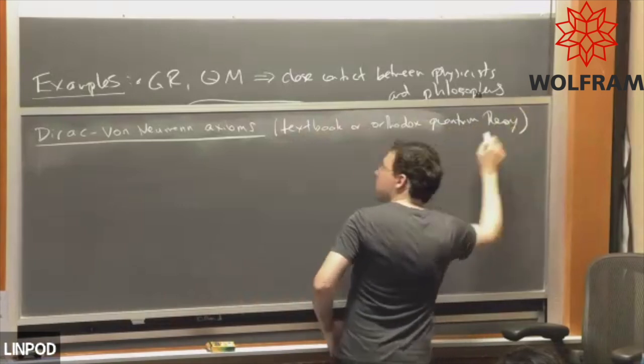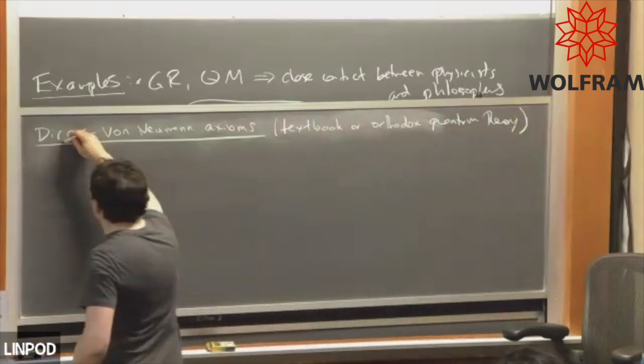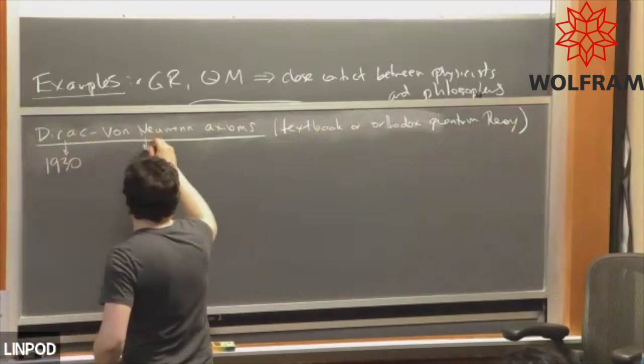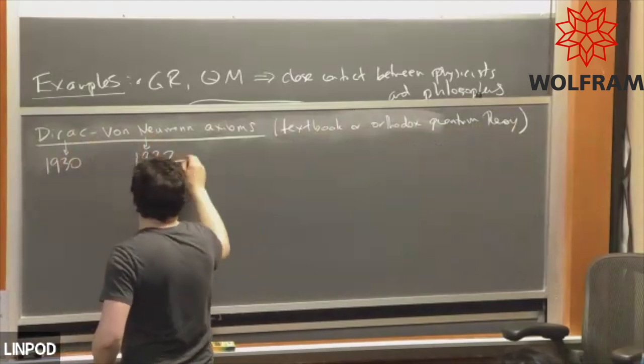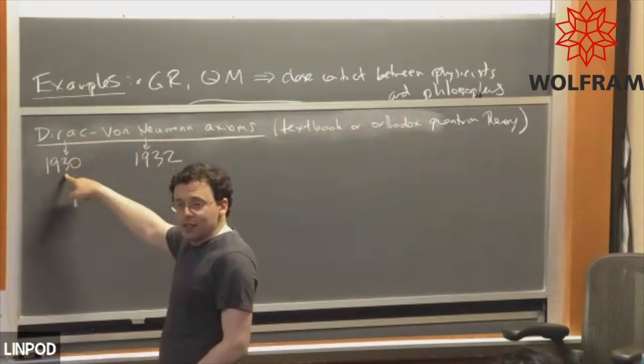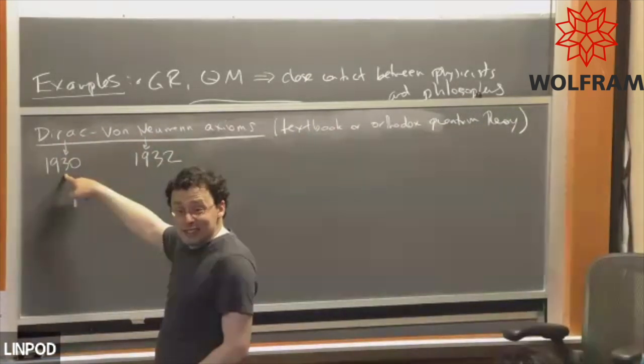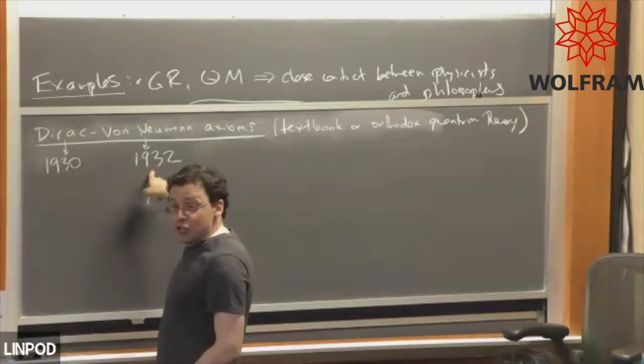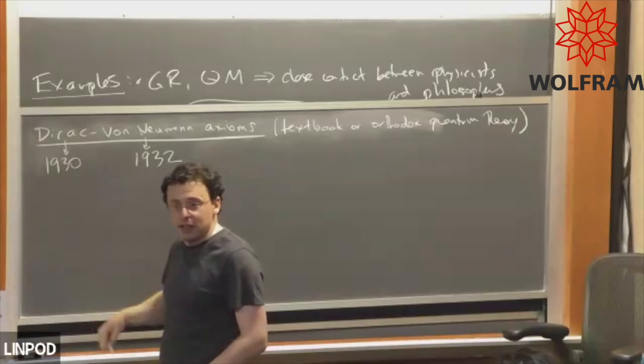Now why do I say Dirac and von Neumann? Dirac formulated these in a textbook in 1930, von Neumann in 1932. 1930, that was Principles of Quantum Mechanics. Dirac was in his 20s. Let that sink in, it was like 25.